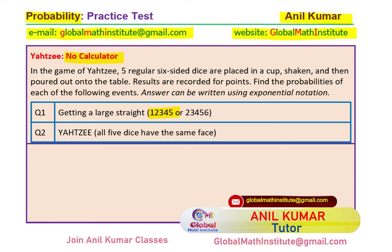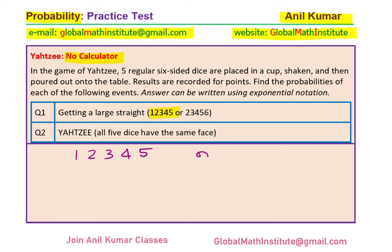Now let us take the solution of these questions one by one. The very first one is how do we get a large straight, which is either 1, 2, 3, 4, 5 or 2, 3, 4, 5, 6. As you know, there are five six-sided dice, so the total number of possibilities is always 6 to the power of 5. Now we have to get these five numbers in order.